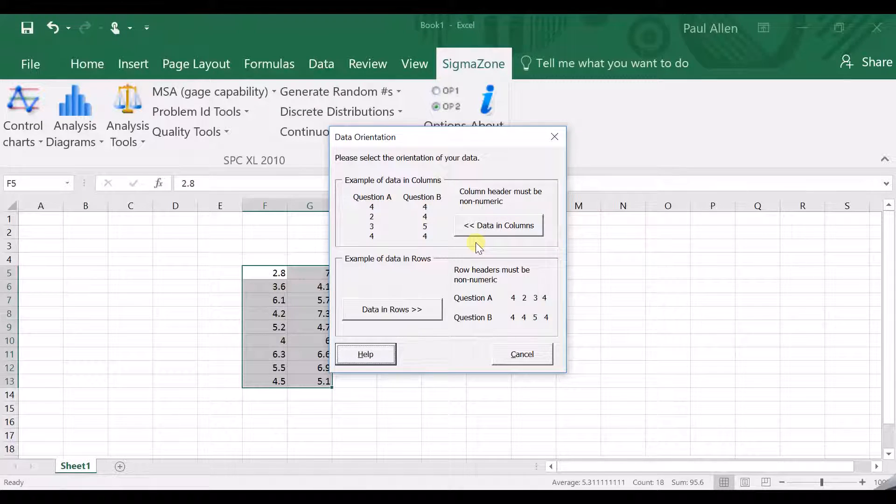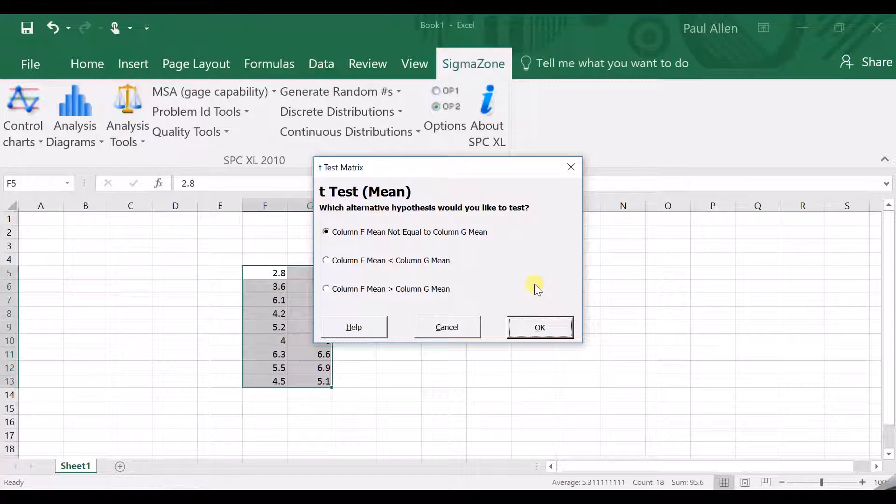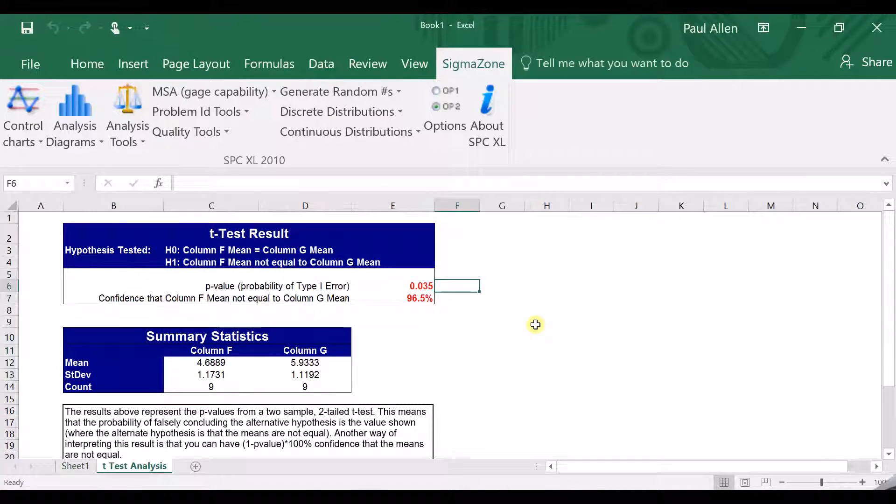Now what I'm going to do is highlight the data set. This is a standard way of using SPC Excel. Highlight the data set, select the tool. Then it says, is that the data? Yes, it is. It then says, how did you put the data in? Did you put it in columns or rows? Well, I put it in columns. Click Next. Then it says, what would you like to know? Do you want to know if they're just not equal to one another? Do you want to know if one's greater than, one's equal to, greater than, or one's less than the other, in terms of the shift in the mean? Now, I don't care which way the mean's gone. I just want to know whether temperature made a difference. So it doesn't matter to me. So I'm going to go not equals to. So I just want to know that there's been a shift. Click Go.